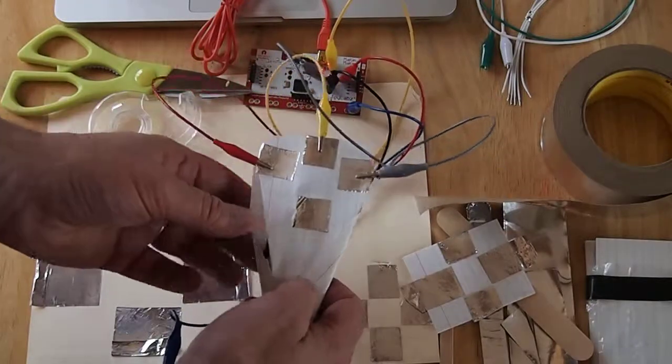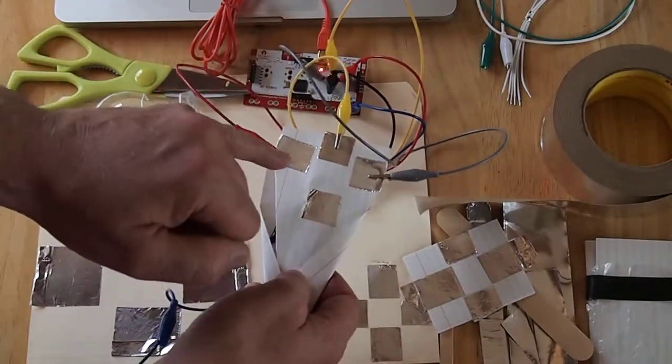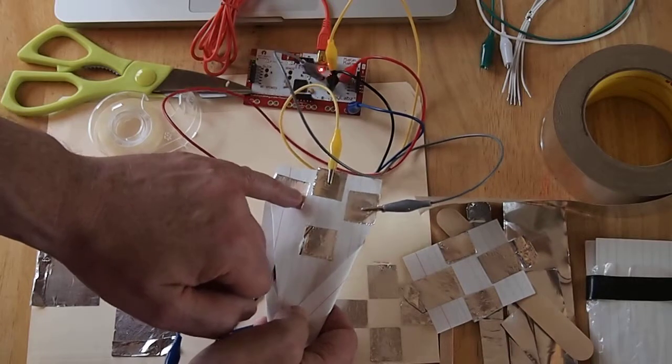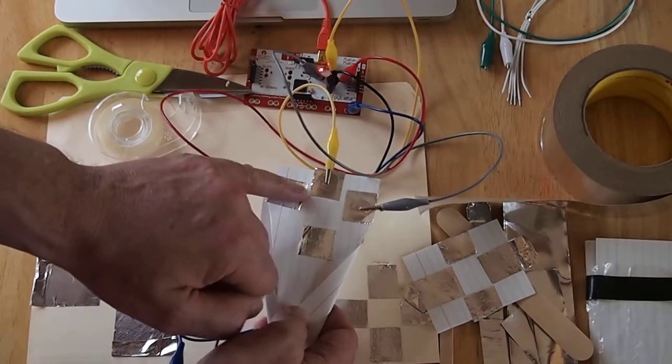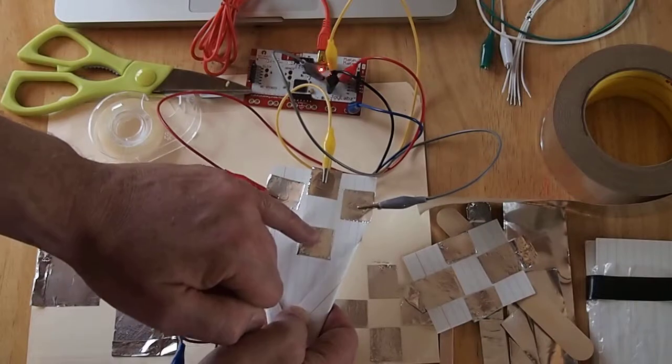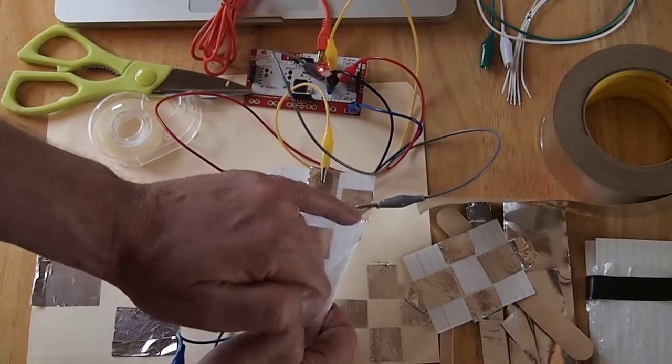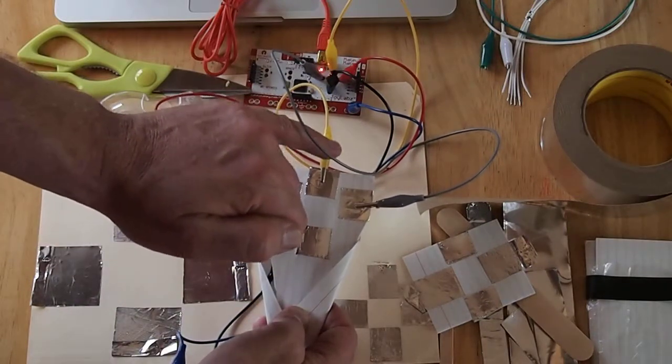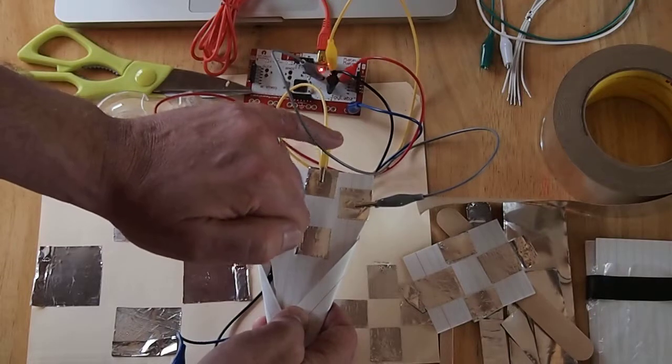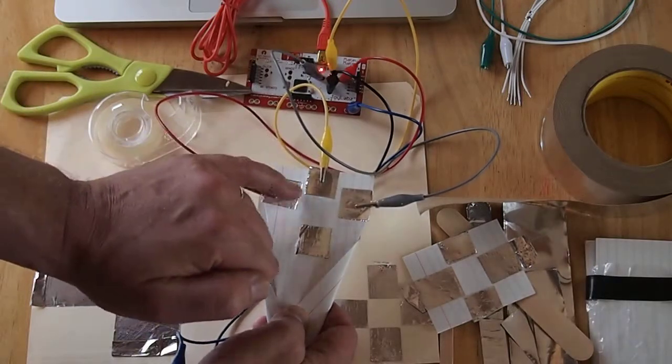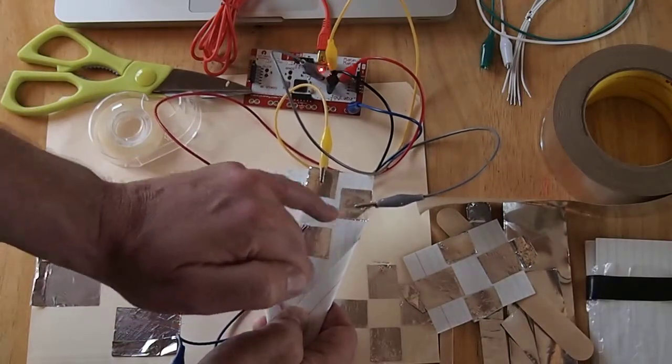So basically if something conducts electricity it makes a good control pad. And if it doesn't conduct, like this rubber boot here, then it's an insulator. So it gets you working with conductors and insulators.